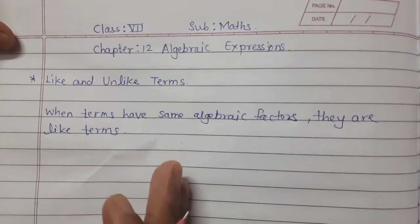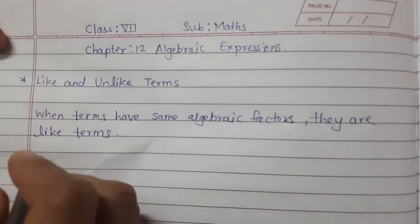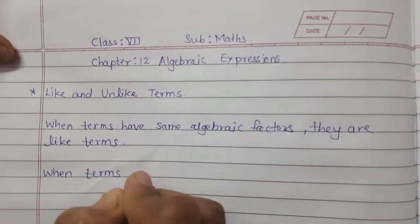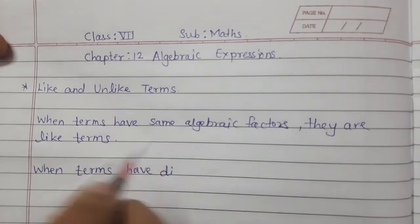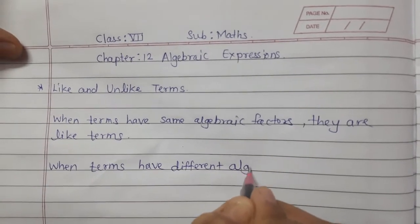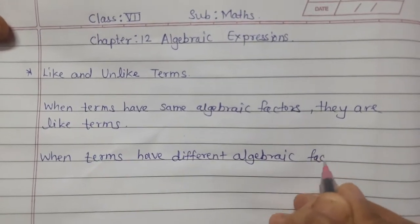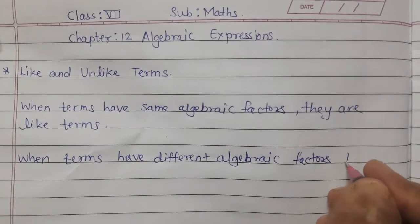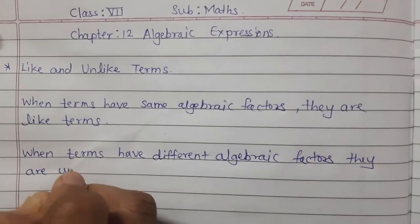When terms have different algebraic factors, they are unlike terms.